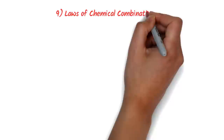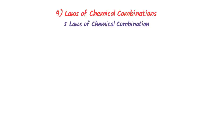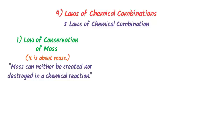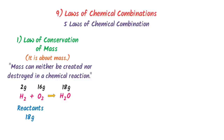The ninth topic is laws of chemical combination. There are five laws describing the basic rules by which atoms and molecules combine. The first is the law of conservation of mass, which states that mass can neither be created nor destroyed in a chemical reaction. For example, 2 g of hydrogen and 16 g of oxygen react to form 18 g of water — the mass of reactants equals the mass of products.